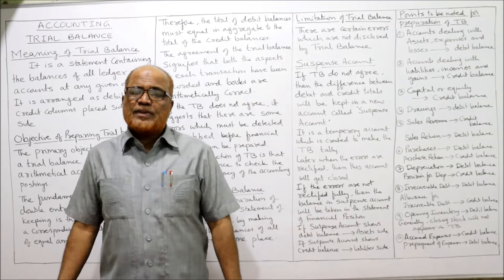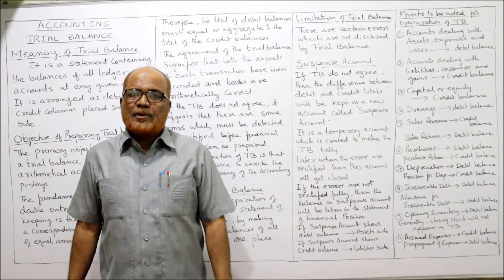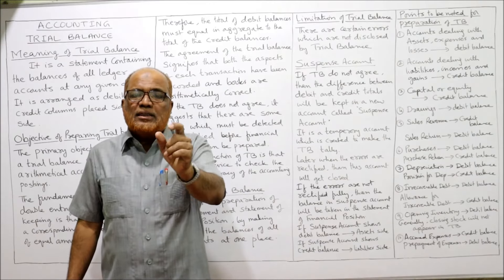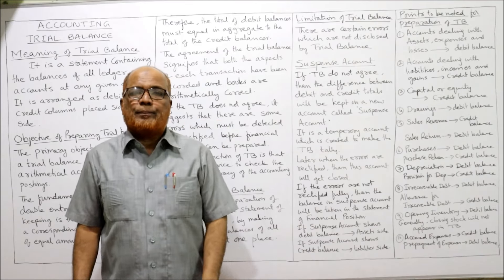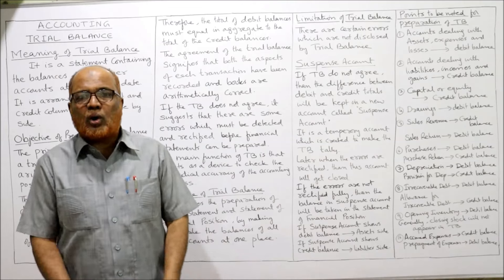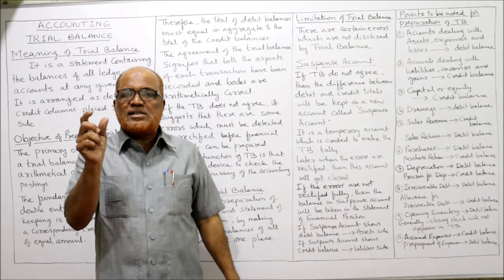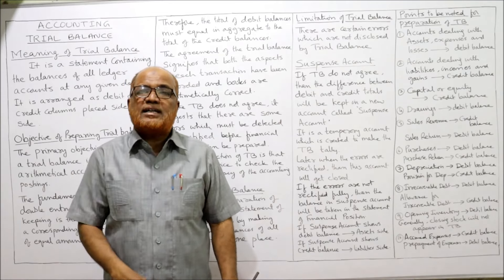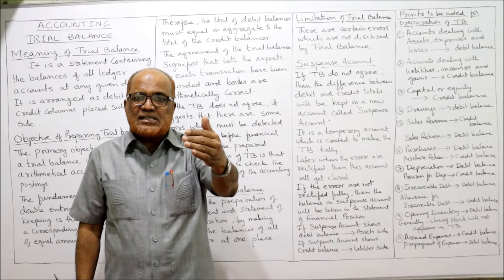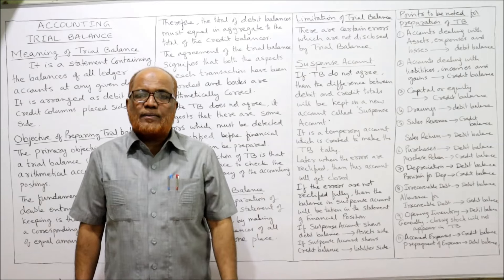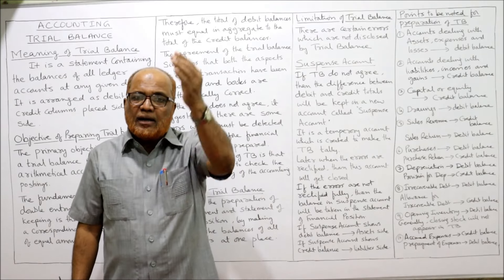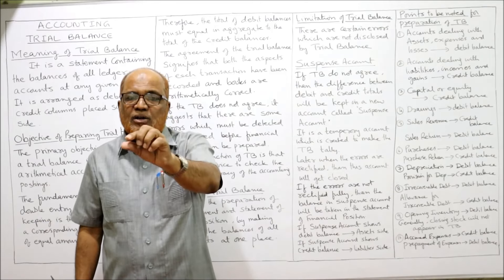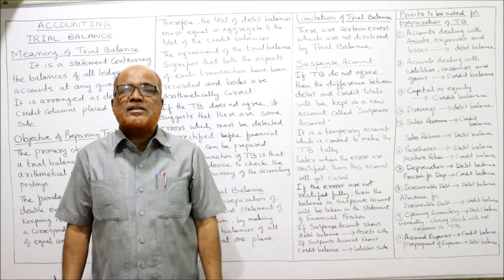Regarding the suspense account: sometimes the trial balance will not agree, but we are in a hurry to make the financial statements. Temporarily, the difference between the debit and credit column is put into a new account called the suspense account. The suspense account is a temporary account which is opened only when the trial balance is not tallying. For example, if the debit side total is 10,000 and the credit side total is 9,000, the difference of 1,000 is put into the suspense account.